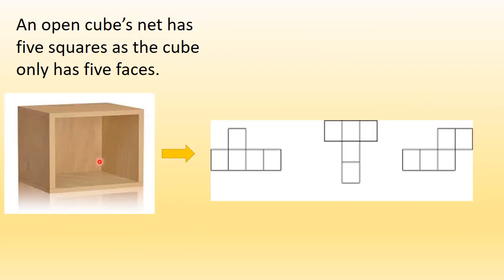Now look at this. This is an open cube — you can see a box in the shape of a cube, but one face is missing. The front face is missing, so this is an open cube, not a closed cube. An open cube's net has five squares because one face is missing. For example, if I make this the base and these are the two sides, then this would be the top and this would be only one side — one square is missing because this is an open cube. If you fold these nets again, you will get the open cube again. When you unfold it, you get the nets, and when you fold the nets back, you get the 3D shape which is the open cube.